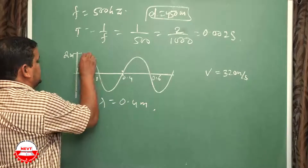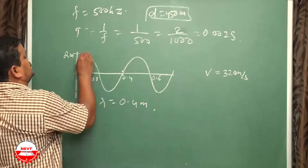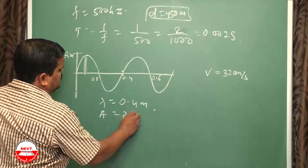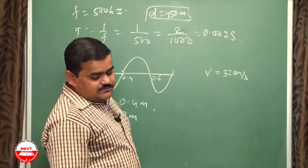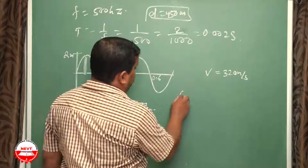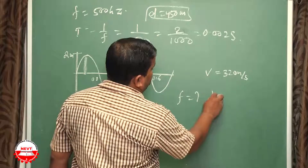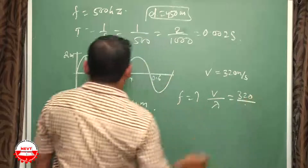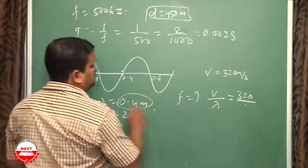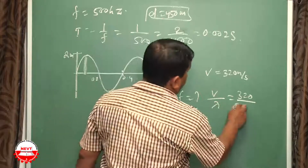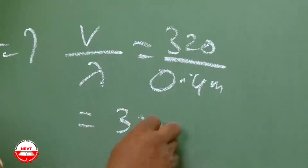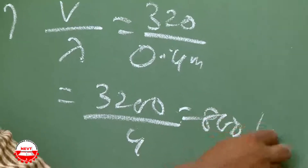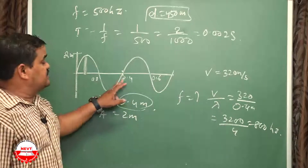The amplitude is the height of the crest, which is 2 meters. So amplitude = 2 m. For frequency: F = V/λ = 320 / 0.4 = 3200 / 4 = 800 Hz. This is a very important question — observe carefully.